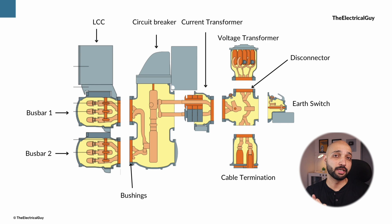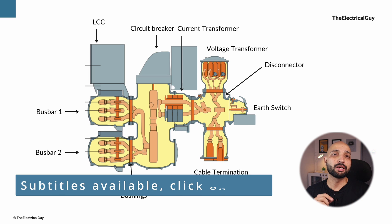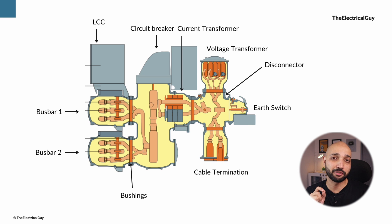A GIS or gas insulated switchgear consists of different switchgear connected together. In this video we will talk about the different components used in this 145kV GIS bay that you can see on your screen.